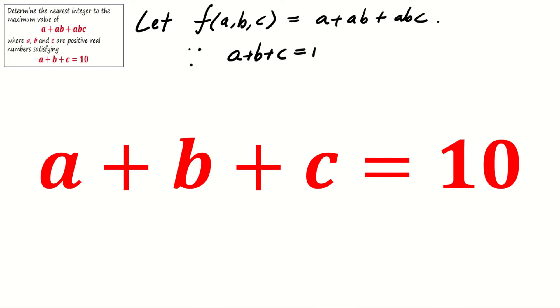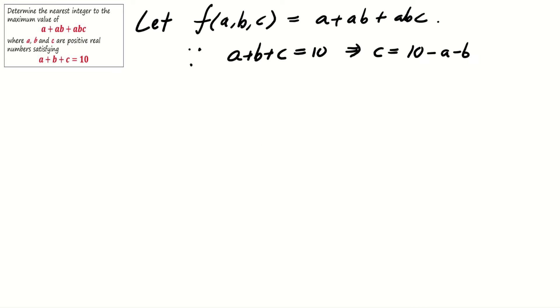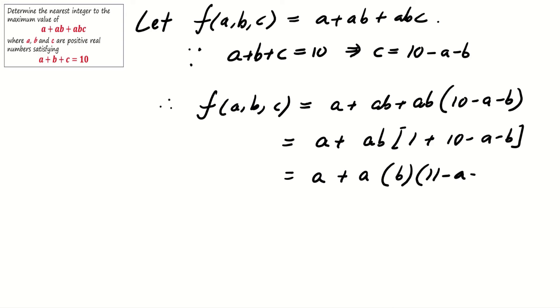Given that a plus b plus c equals 10, we have c equals 10 minus a minus b. Substitute it into f and we obtain f as a plus ab plus ab times (10 minus a minus b). We obtain f as a function of a and b.